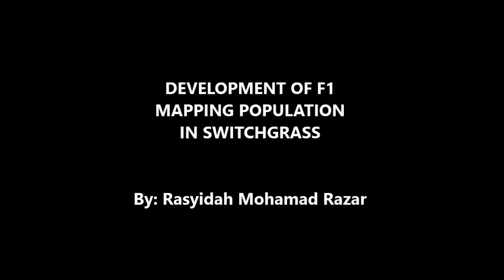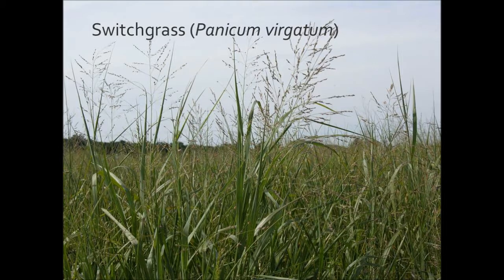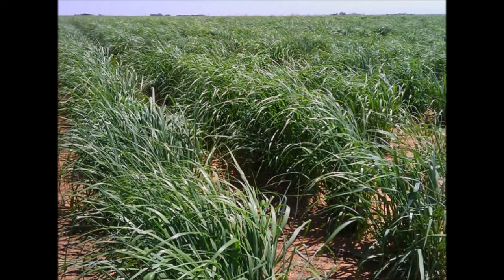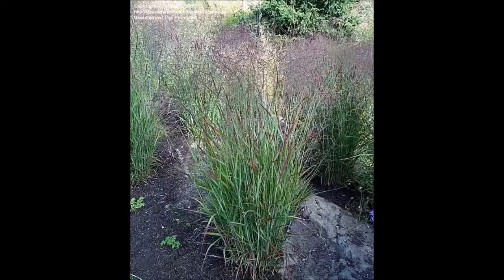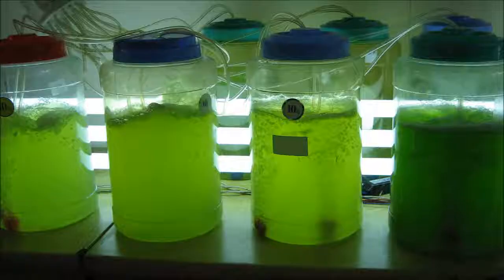Development of F1 mapping population in switchgrass. Switchgrass is a perennial warm-season grass native to North America. It is used primarily for soil conservation, forage production, as an ornamental grass, and more recently as a biomass crop for ethanol and butanol production.